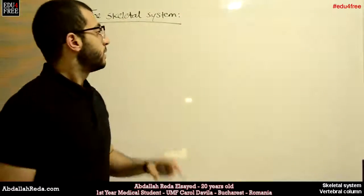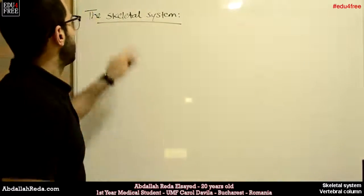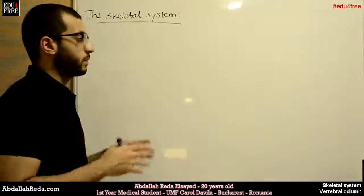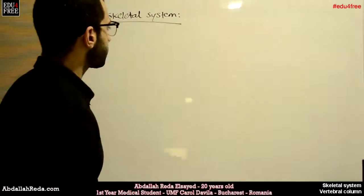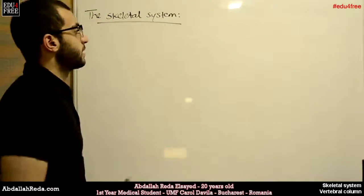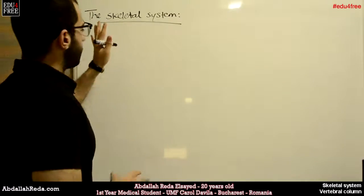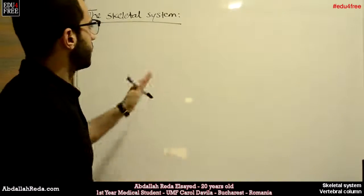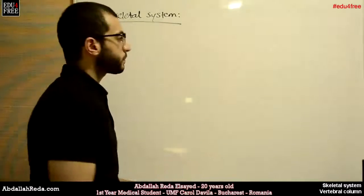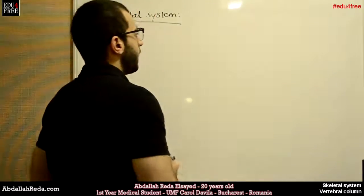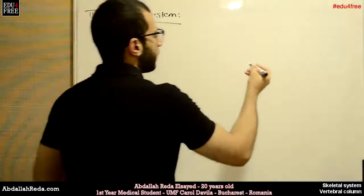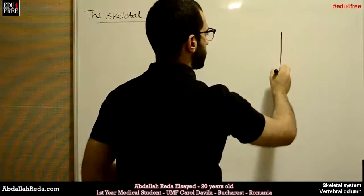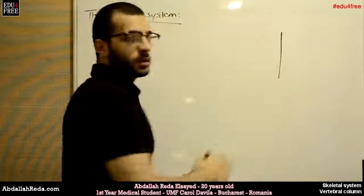Today we are going to talk about the Skeletal System. In this chapter we are talking about support in human beings. The Skeletal System is a system of support in the human body, and it has an axis on which all the other parts are attached.